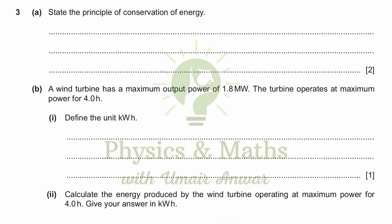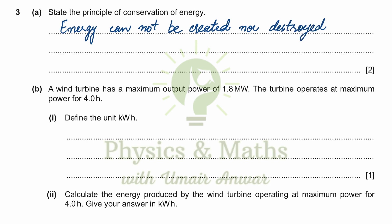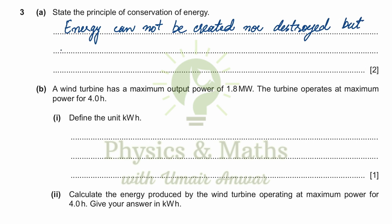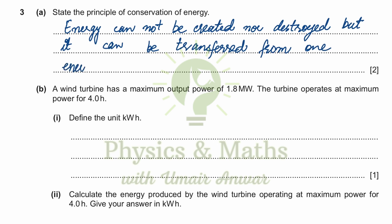Number one, part a: state the principle of conservation of energy. Energy cannot be created nor destroyed, but it can be transferred from one energy store to another, or from one form of energy to another form of energy. That is the conservation of energy principle.